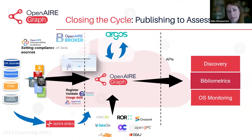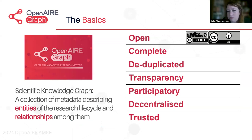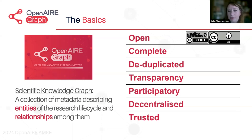We also have another service called OpenAIR Broker, which helps create the final metadata in a way that is very comprehensive to final users. You know that the OpenAIRGraph values are to be open, complete, deduplicated, transparent, participatory, decentralised and trusted.